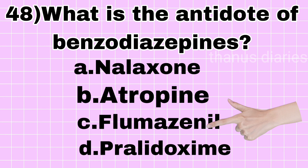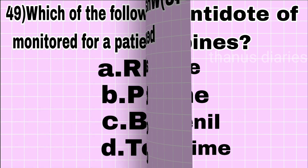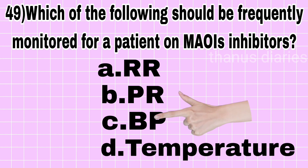Which of the following should be frequently monitored for a patient on monoamine oxidase inhibitors? Respiratory rate, pulse rate, blood pressure, or temperature? The answer is blood pressure.